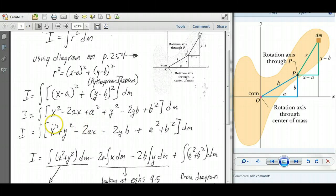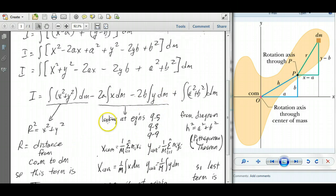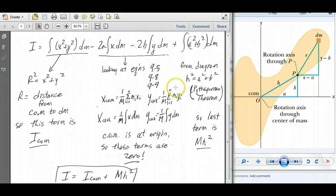And now I'm going to multiply out the square terms, and rearrange it, and look at each term individually, take the integral of each term individually. The first term, x squared plus y squared, I recognize that as capital R squared. That's not drawn in this diagram on the right, but that is the distance from the center of mass to the point of mass that I'm looking at. So that's R squared.